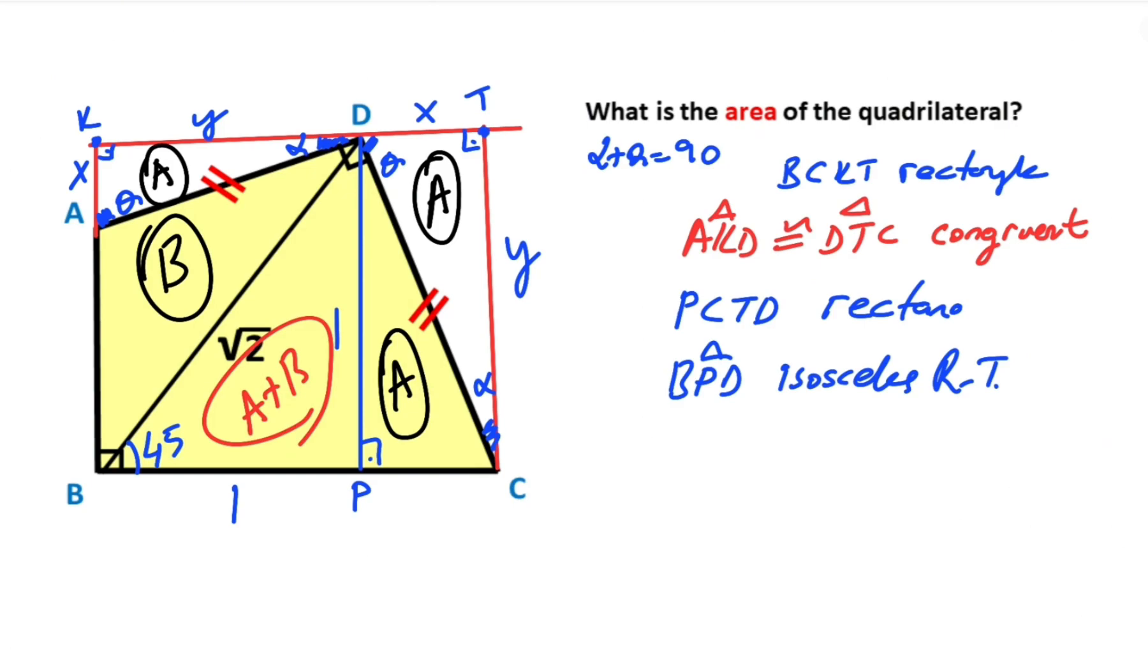Therefore, quadrilateral area equals 2A plus 2B, which is two times in parenthesis A plus B. So, if you focus on triangle BPD, the area of the triangle BPD is equal A plus B.